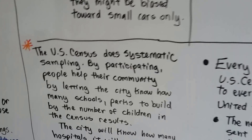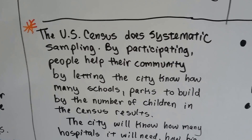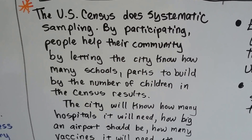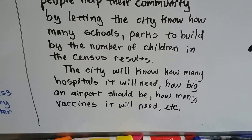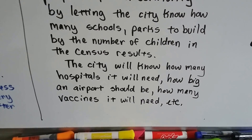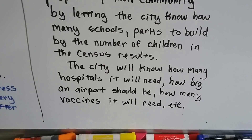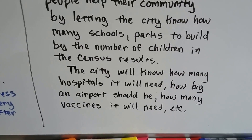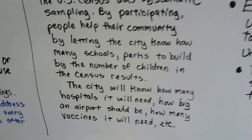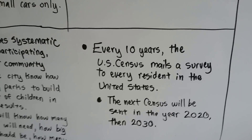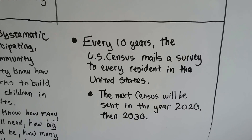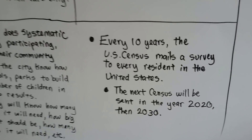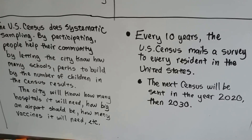The U.S. Census helps the community by letting the city know how many schools or parks to build based on the number of children in the results. The city will know how big hospitals should be, how many hospitals are needed, how big an airport should be, or how many vaccines will be needed in case of an outbreak. Every 10 years, the U.S. Census mails a survey to every resident in the United States.